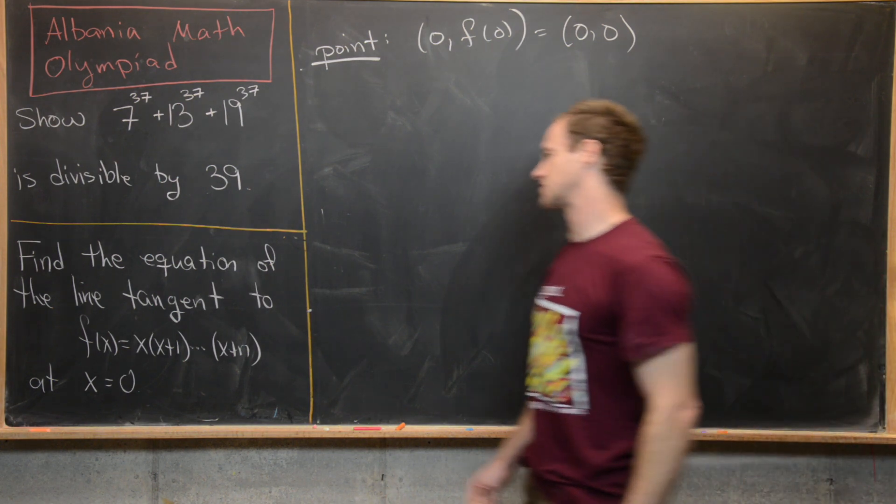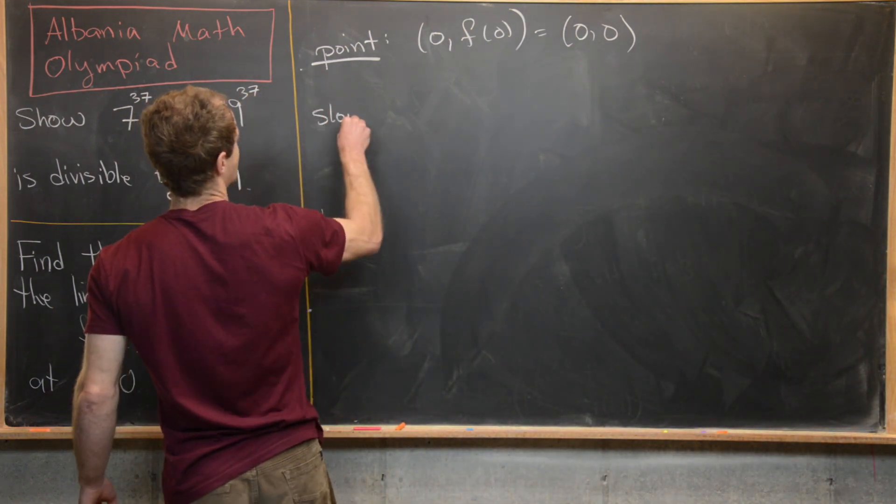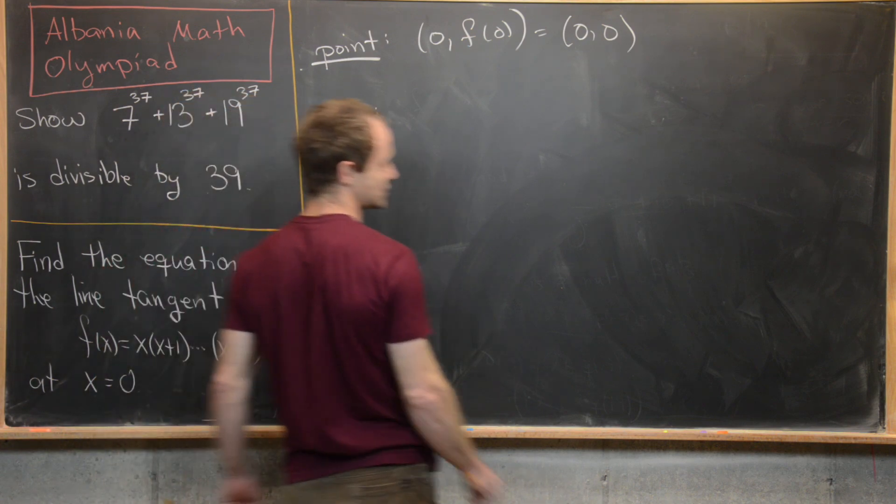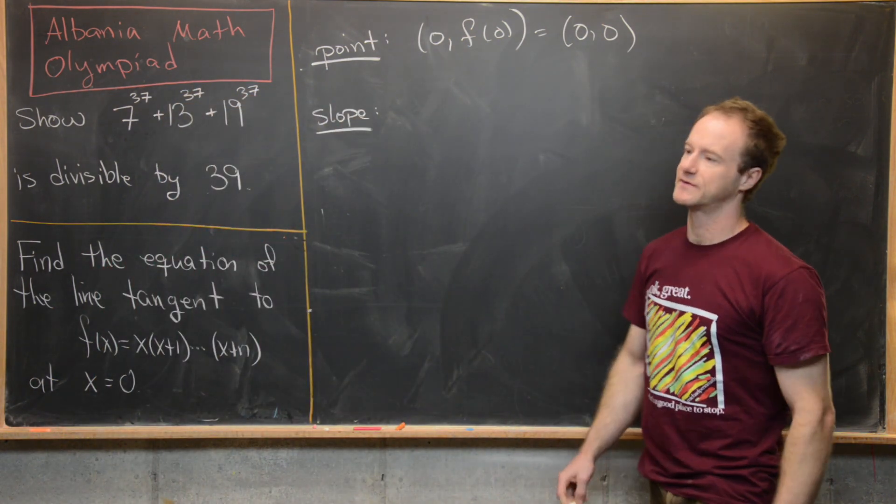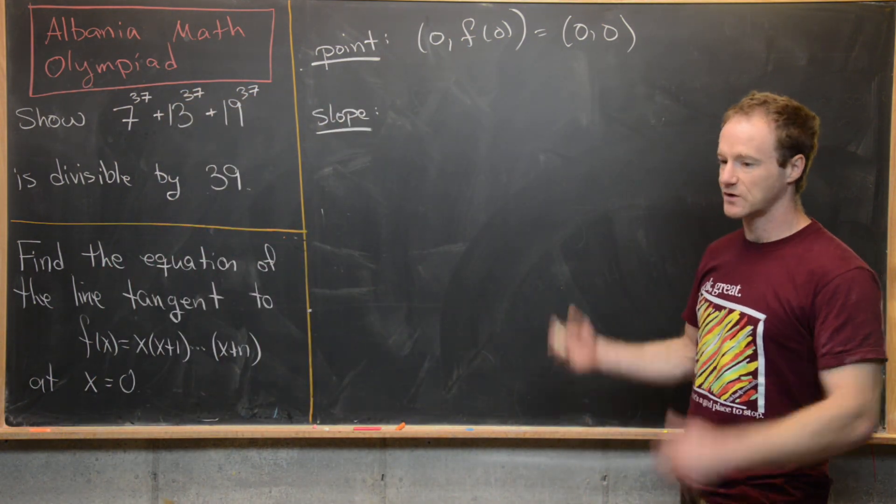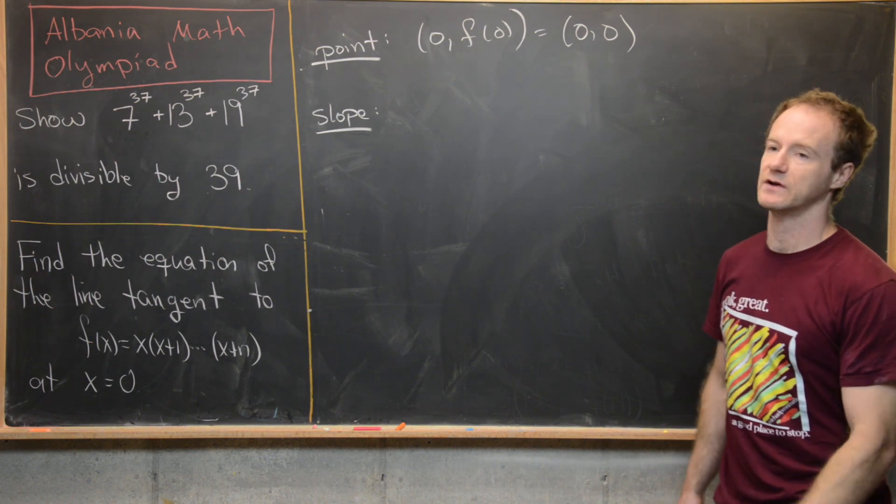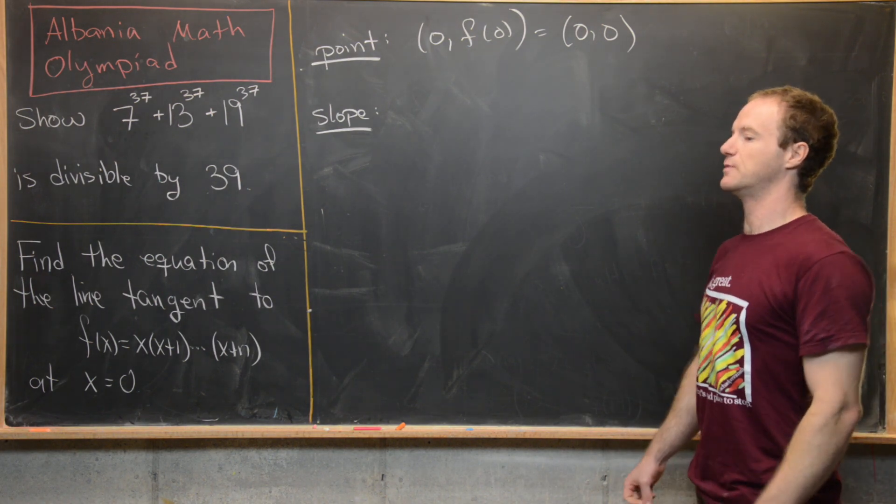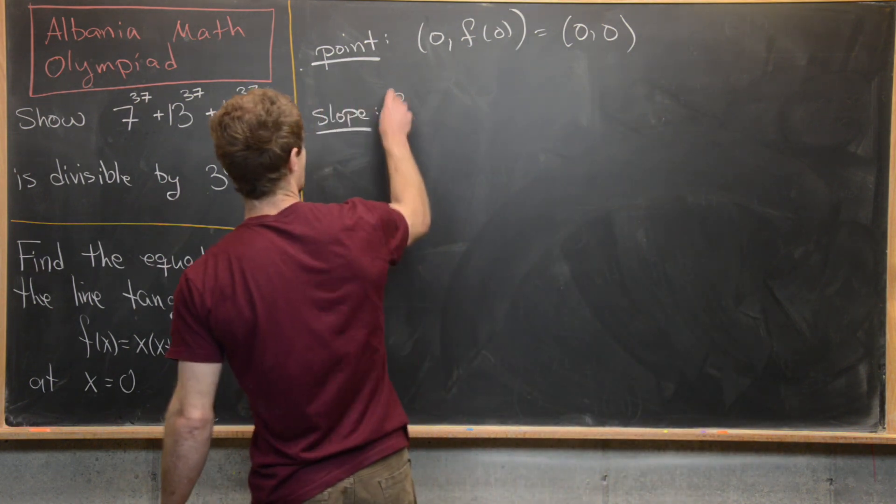Whenever we're finding the slope of a tangent line, we need to find the derivative. So that's like kind of one of the first motivations for defining the derivative in the first place as the slope of the tangent line. So let's go ahead and do that.